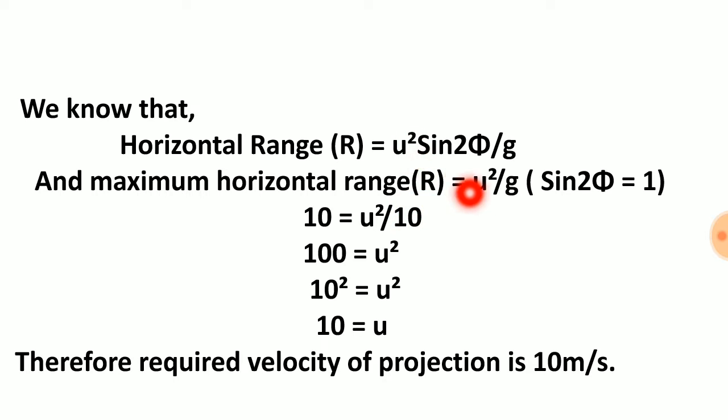That is, R max will be u squared by g. On keeping u and g the same, we can make our horizontal range maximum by maximizing the value of sine 2θ, which is one. So our formula will be R is equal to u squared by g.